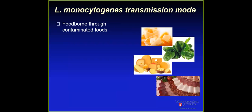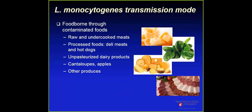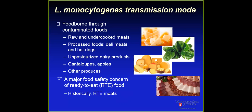Most times we get Listeria monocytogenes through foodborne illness. This can be raw food, undercooked meat, processed food, deli meat, unpasteurized milk, and dairy products. We have had outbreaks with cantaloupes, caramel apples, and other fresh produce. That's why Listeria monocytogenes is a major food safety concern for ready-to-eat meat, and historically is associated with ready-to-eat meat. I'll give some big examples of Listeria outbreaks associated with ready-to-eat meat.